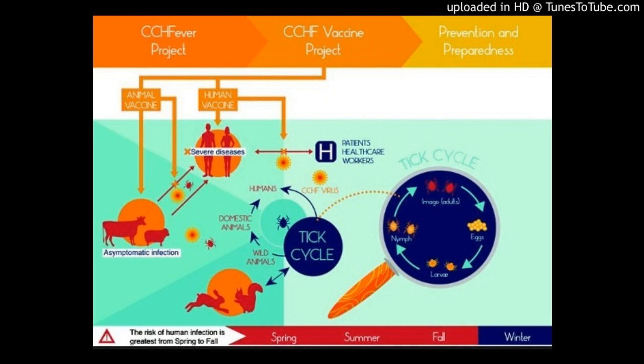Different species of ticks serve either as vector or reservoir for CCHFV. This study was aimed to determine the prevalence of CCHFV in hard ticks (Ixodidae) in the Golstan province of Iran. A molecular survey was conducted on hard ticks (Ixodidae) isolated from six counties in Golstan province, north of Iran, during 2014–15.